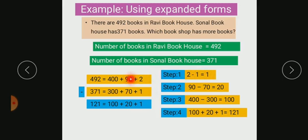Second, you should subtract tens place. 90 minus 70, it becomes 20.